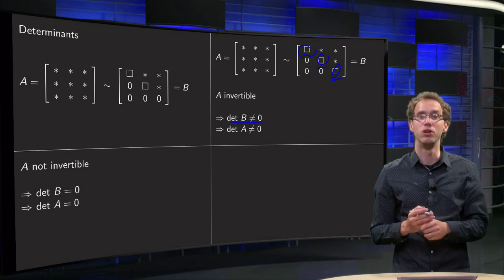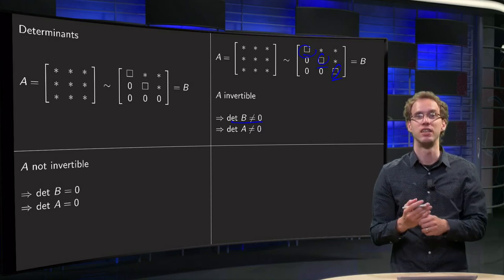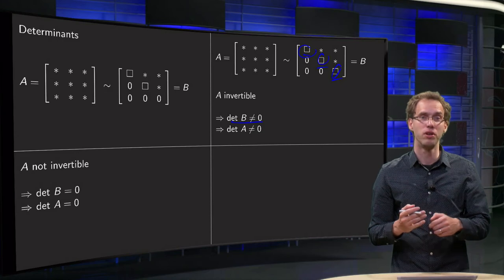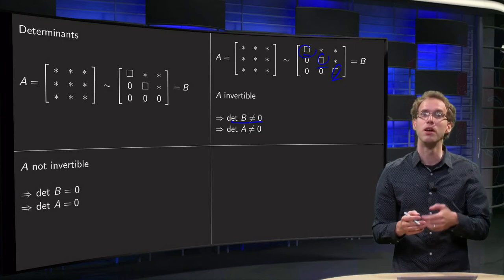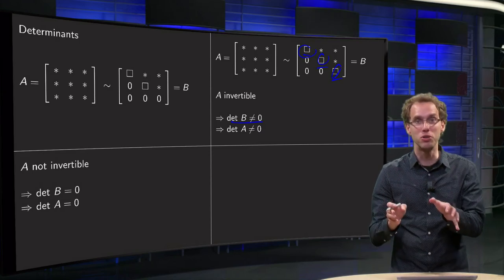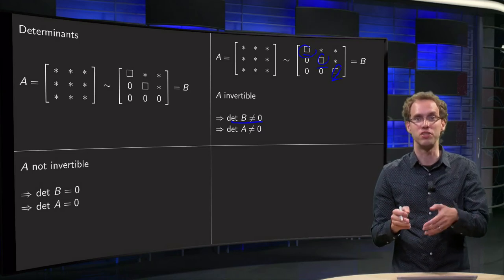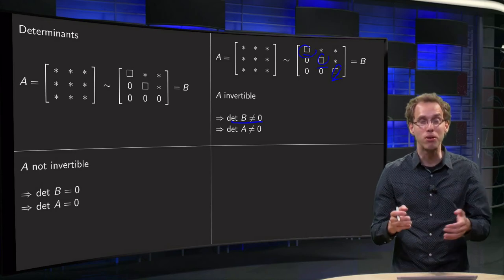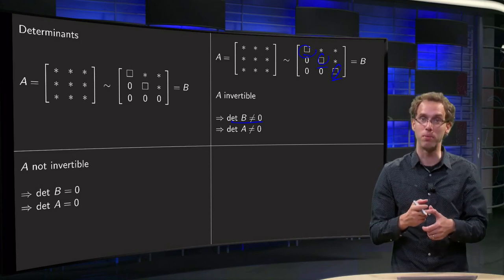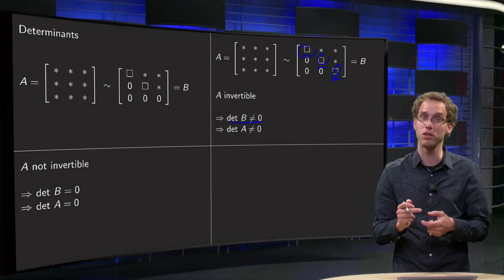During the row reduction, you changed your determinant. For example, it became twice as large or it became minus 1 times the determinant. But again, if your determinant is not 0, say you end up with 6, you could have come from 12 or from minus 6. You could never come from 0 because you are either multiplying by minus 1 or by a number not equal to 0.